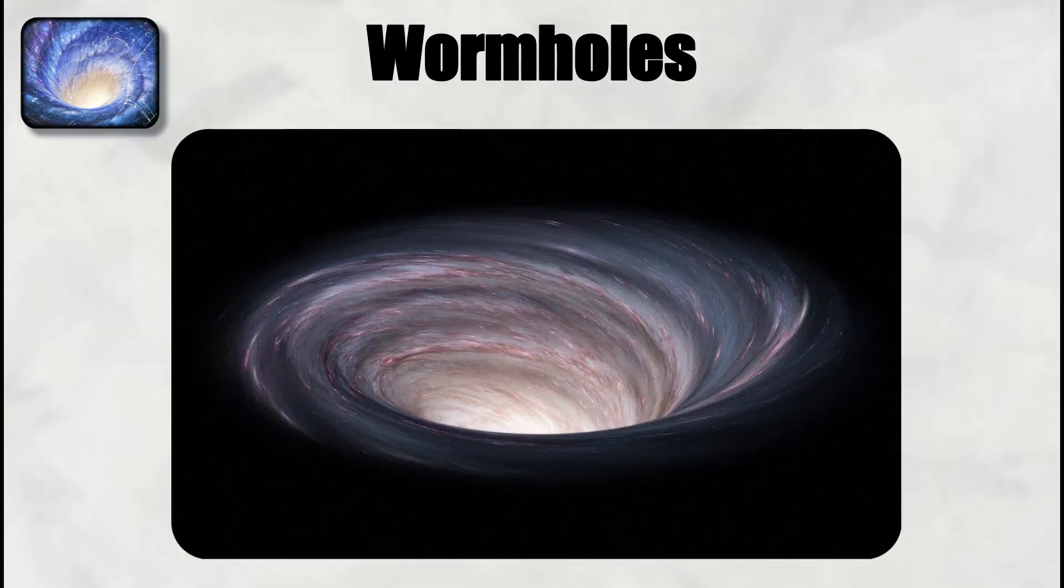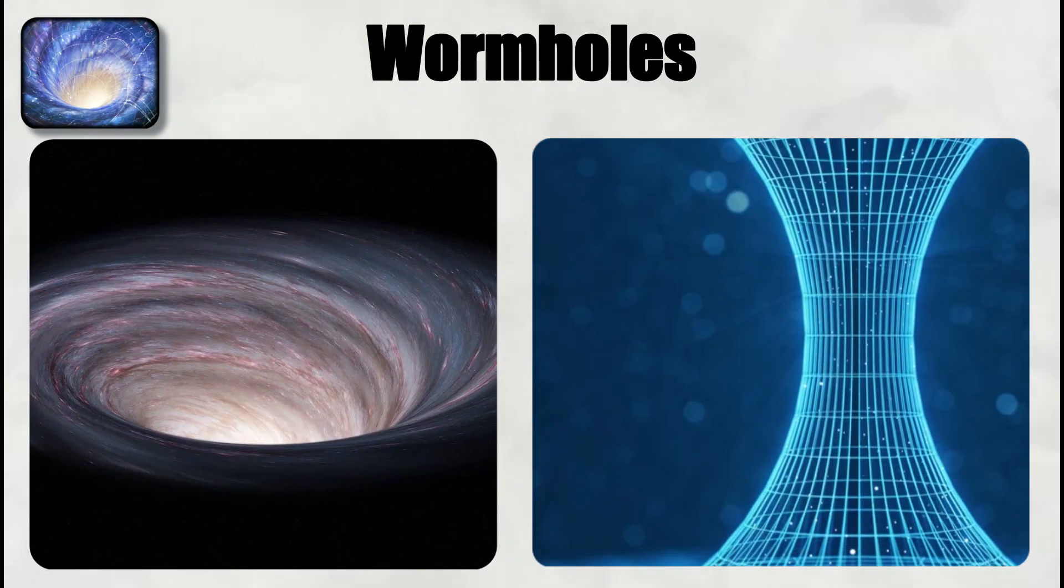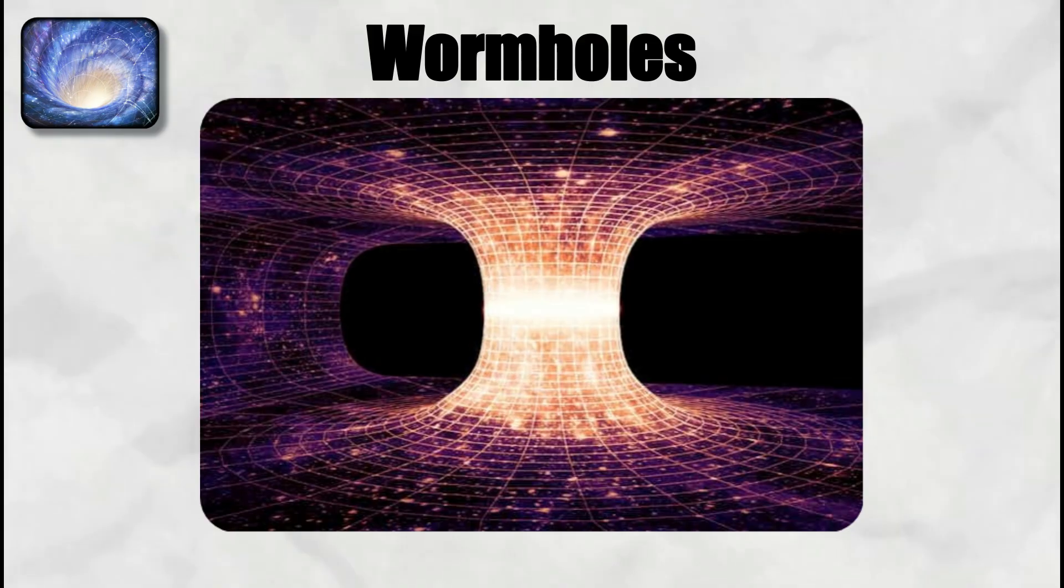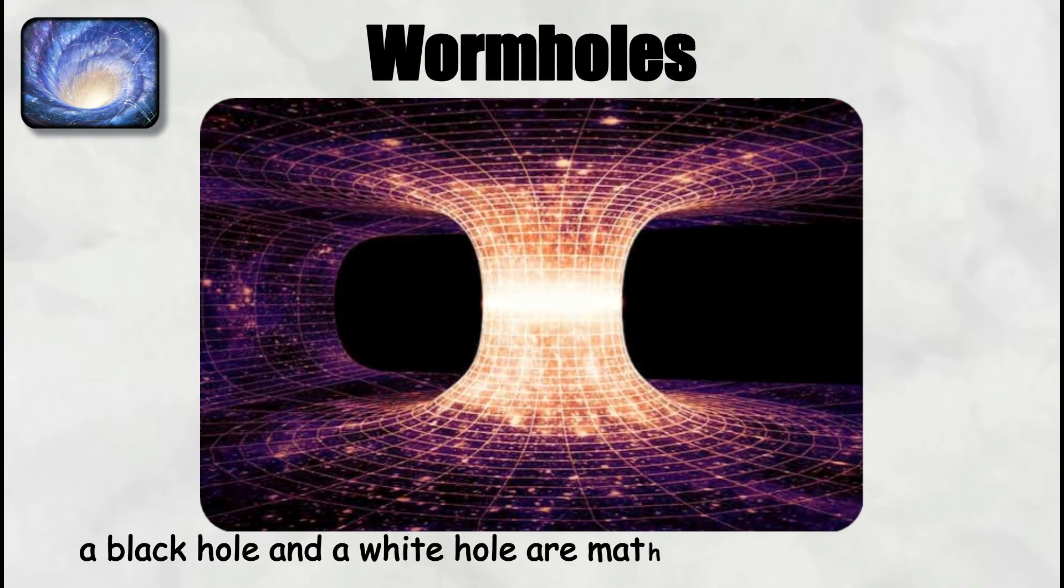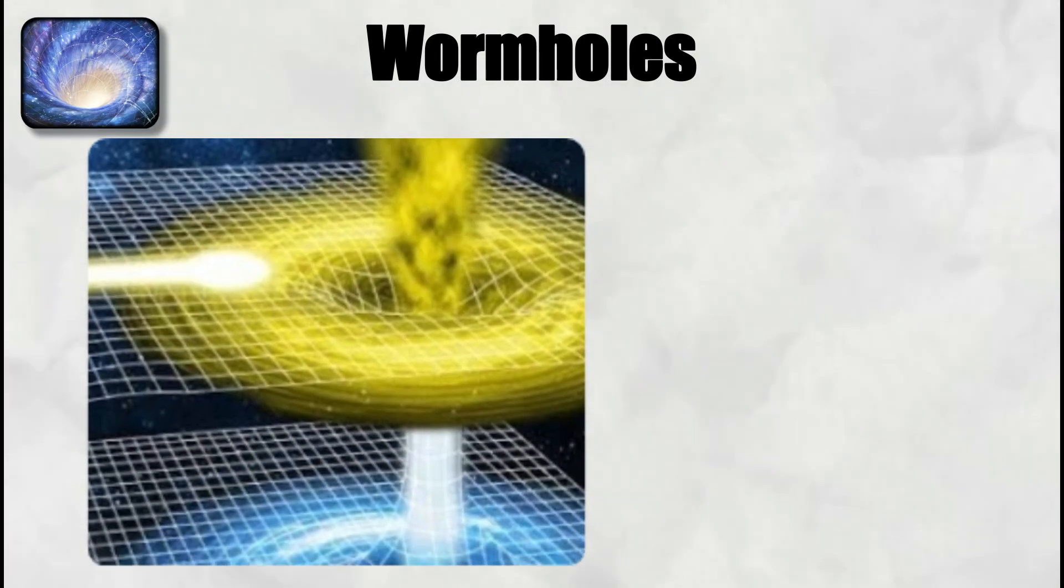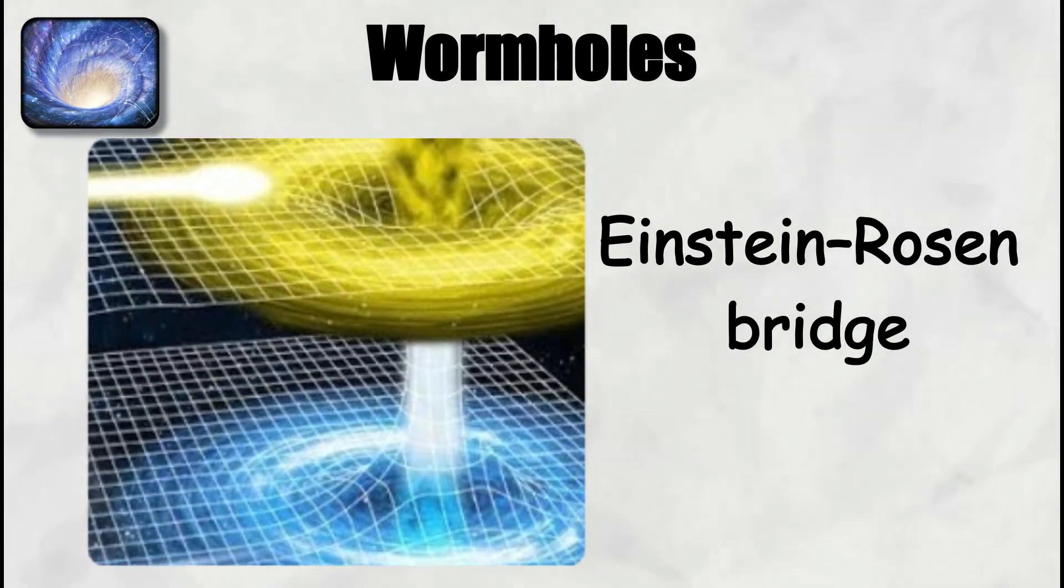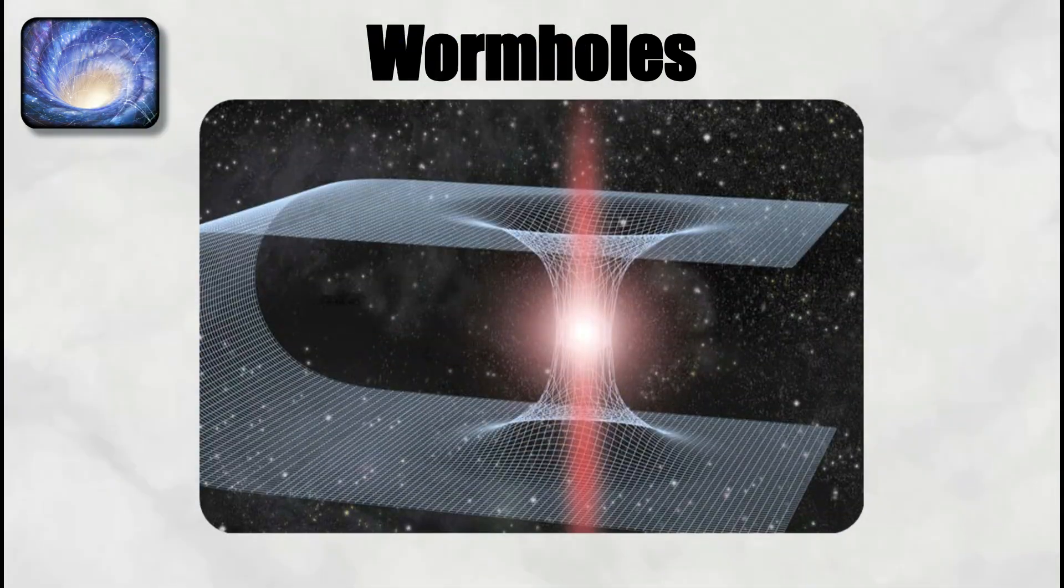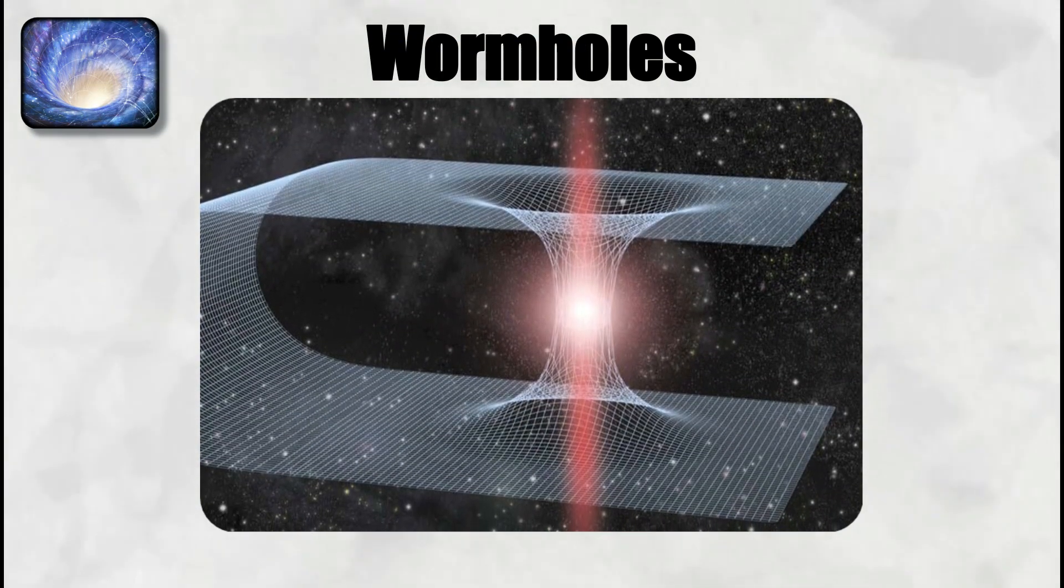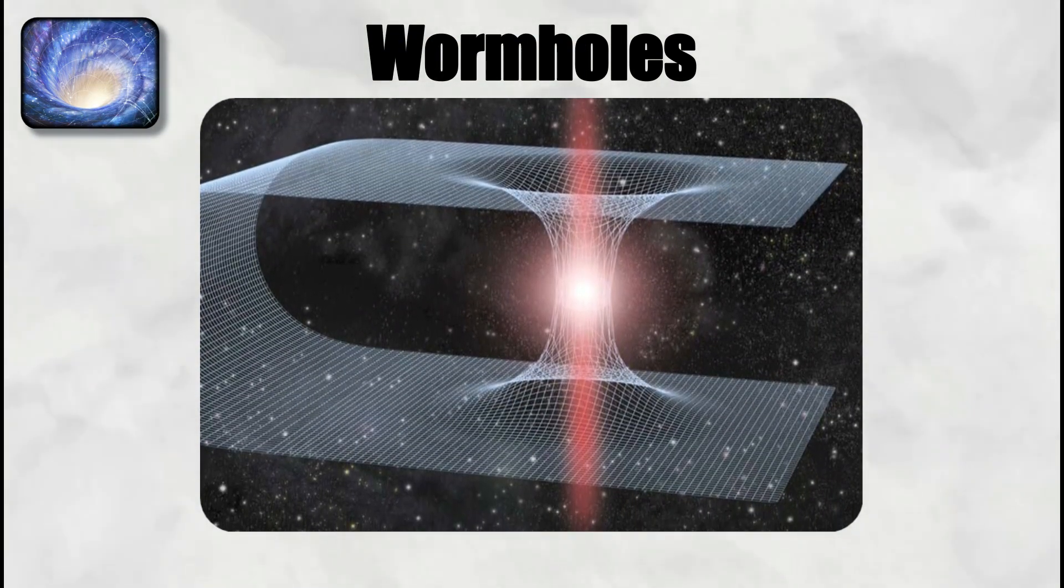Wormholes. A wormhole is a hypothetical tunnel in spacetime that directly connects two separate regions. In general relativity, one of the earliest models appears when a black hole and a white hole are mathematically connected. This structure is called an Einstein-Rosen bridge. The geometry looks like two funnels with their narrow throats joined, linking either two distant locations in the same universe or two completely separate universes.